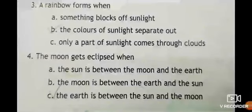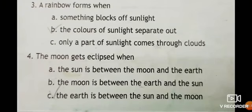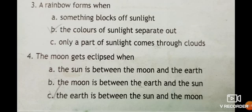Third question: a rainbow forms when. Options are: something blocks off sunlight, the colors of sunlight separate out, only a part of sunlight comes through clouds. The correct option is the colors of sunlight separate out.